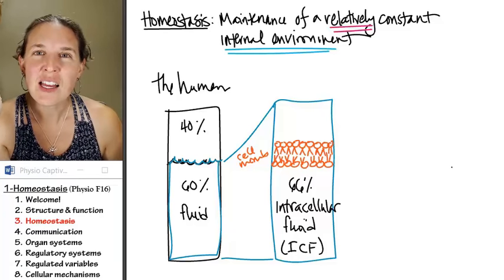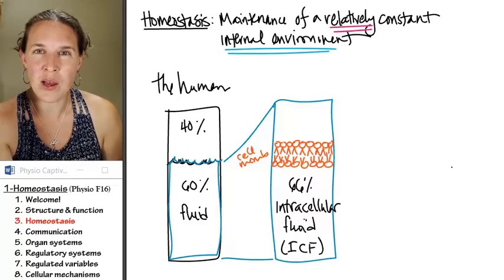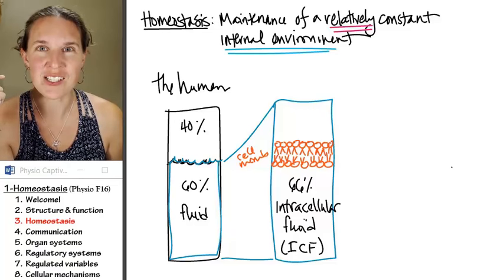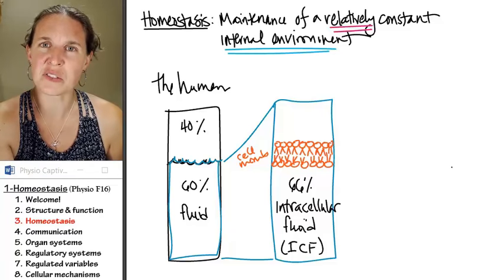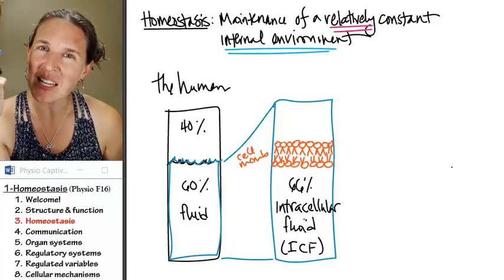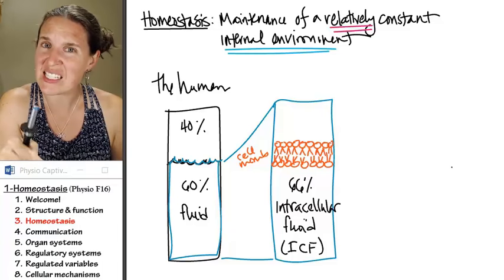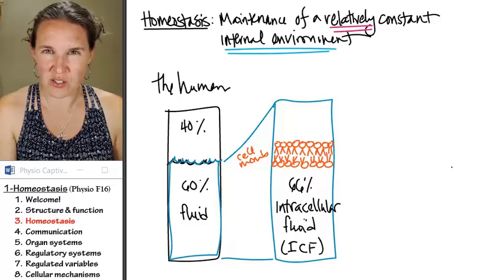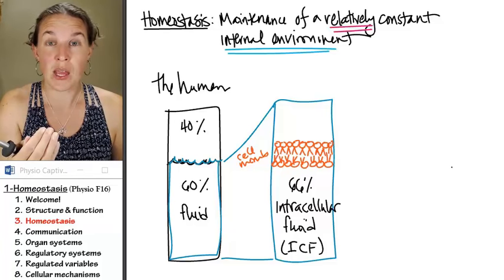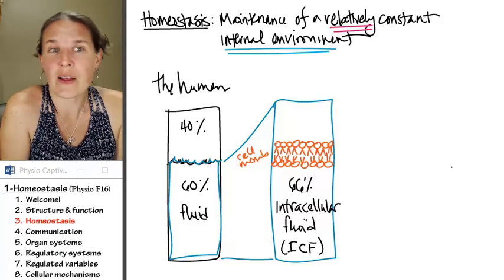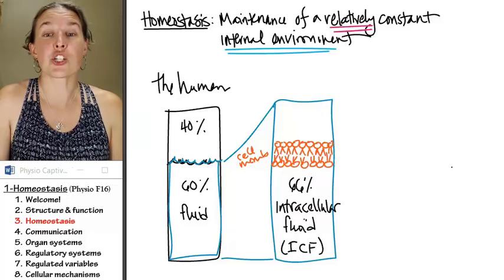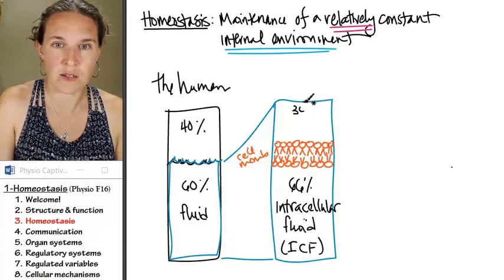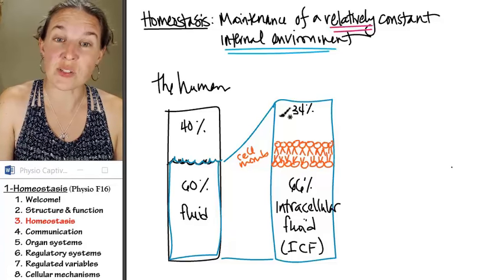But functionally, you can't really tell a whole lot about the state of the intracellular fluid. Different cells with different functions have different characteristics in their intracellular fluid. So maintaining a relatively constant internal environment really doesn't deal with the intracellular fluid. If you wanted to measure a quality of the intracellular fluid, you'd have to measure every single cell, and that's kind of crazy. Why not just measure the 34% which is the extracellular fluid?